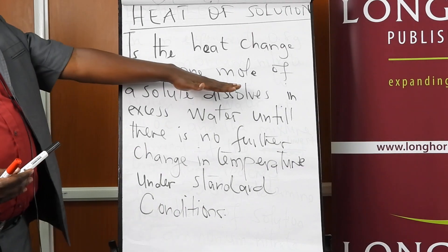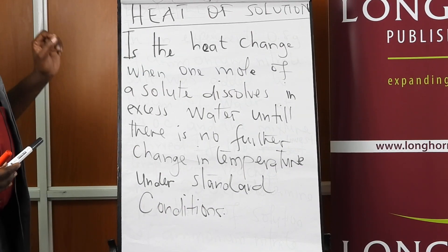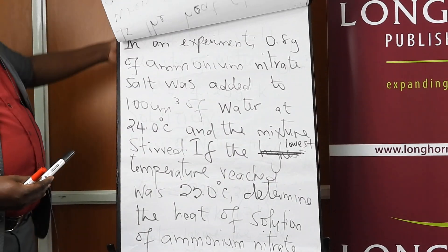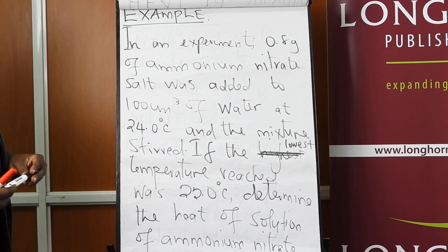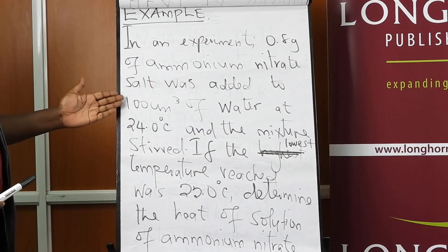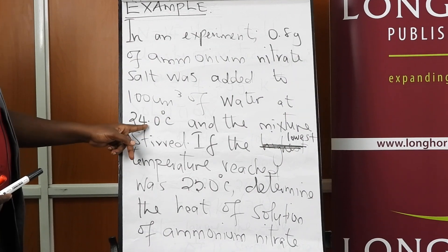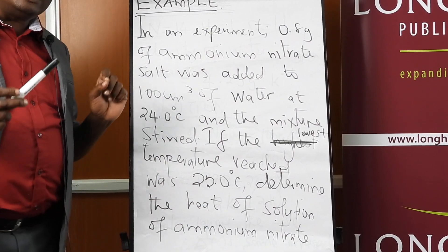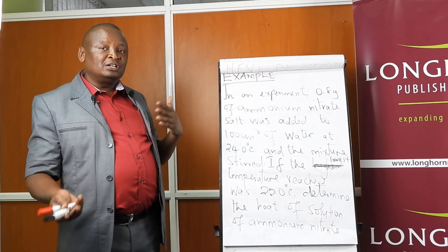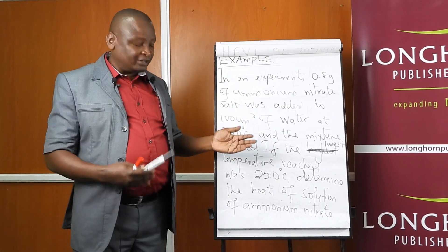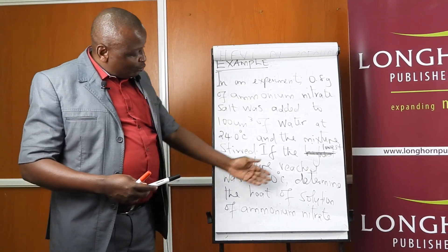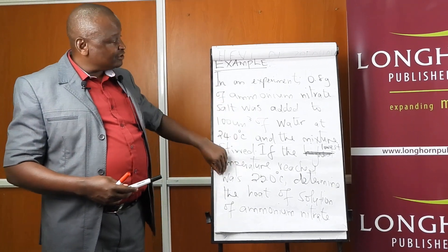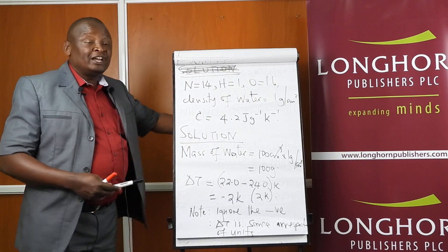As long as you include the quantity as one mole, state that the reaction goes to completion, and specify the conditions, that definition is accurate. In the example, 0.8 grams of ammonium nitrate are added to 100 cm³ of water. The initial temperature was 24.0°C and the temperature dropped to 22.0°C. We are required to determine the heat of solution of ammonium nitrate — how much energy is involved when one mole dissolves in water.